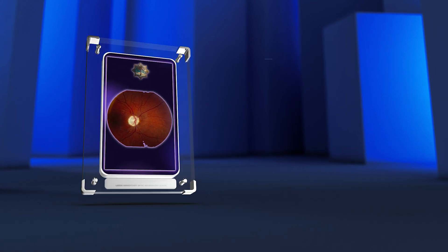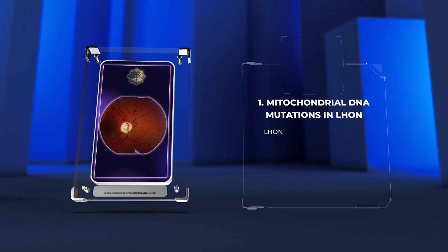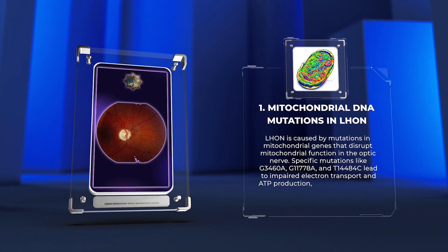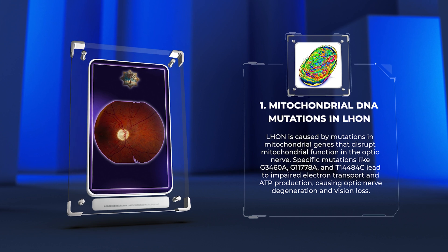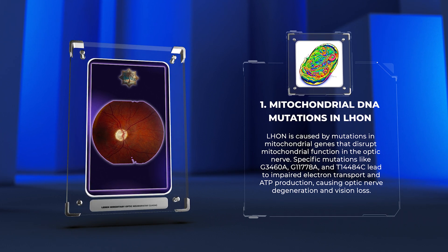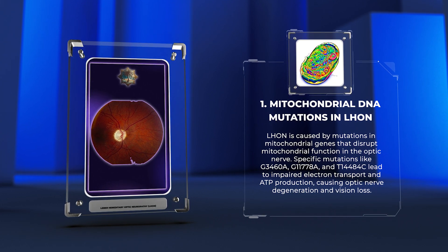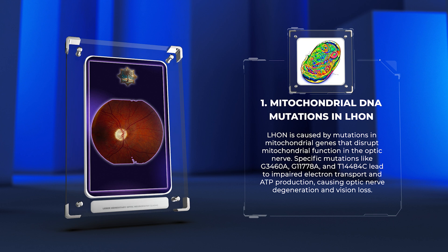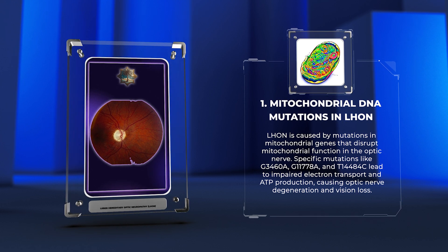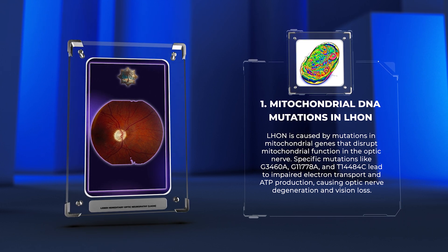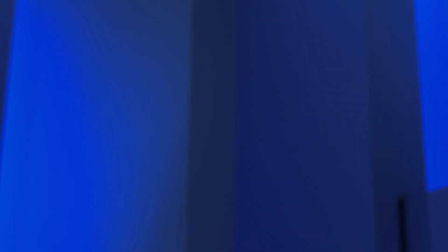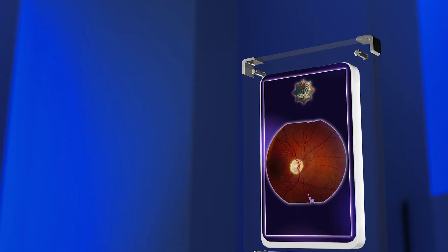LHON is caused by mutations in mitochondrial genes that disrupt mitochondrial function in the optic nerve. Specific mutations like G3460A, G11778A, and T14484C lead to impaired electron transport and ATP production, causing optic nerve degeneration and vision loss.